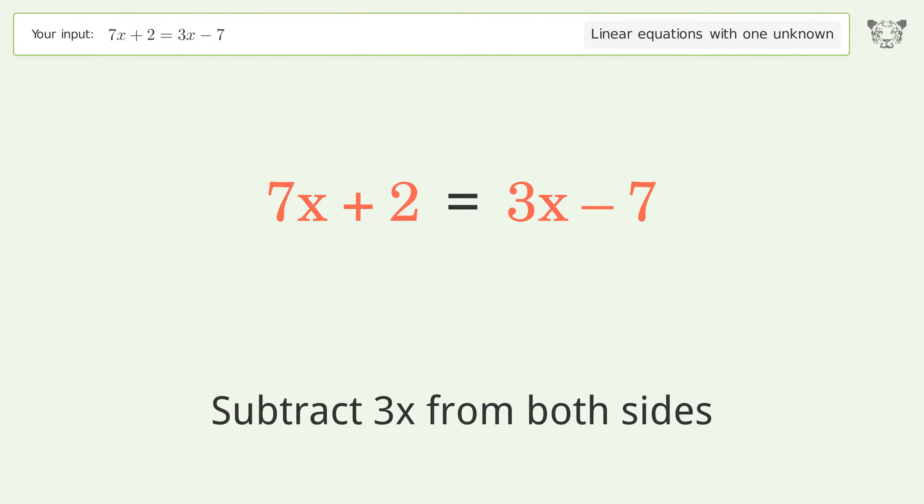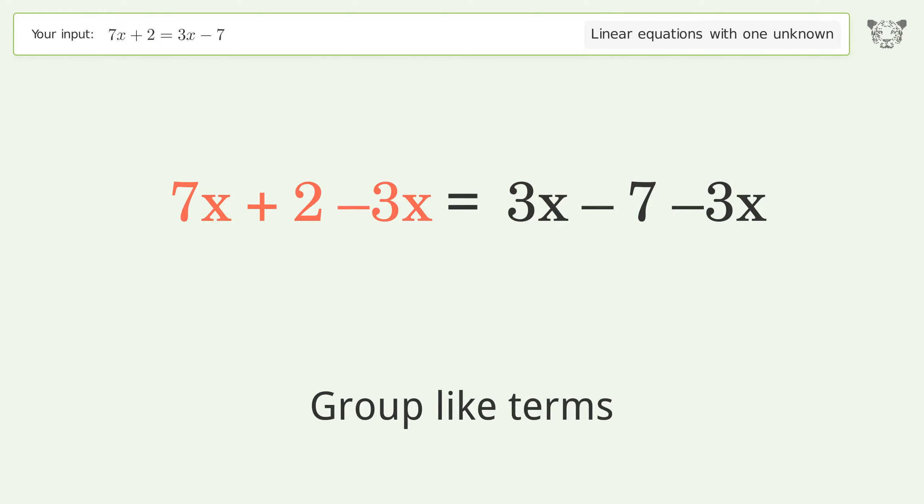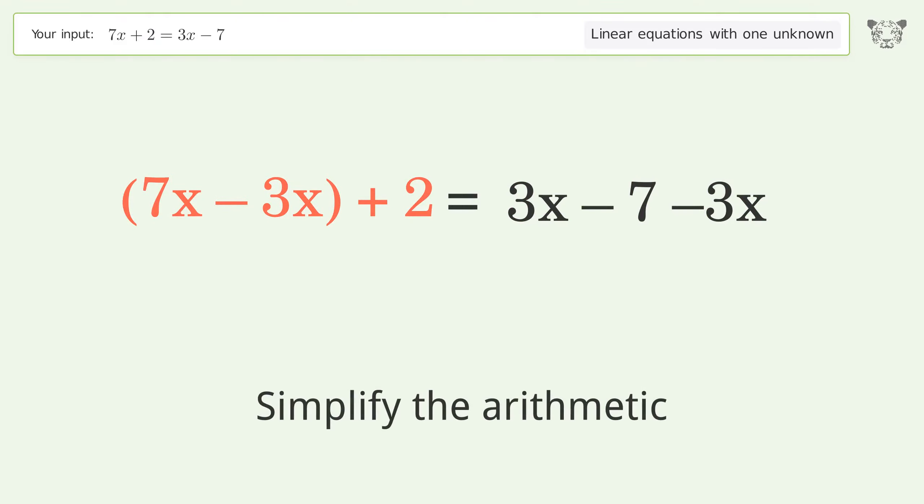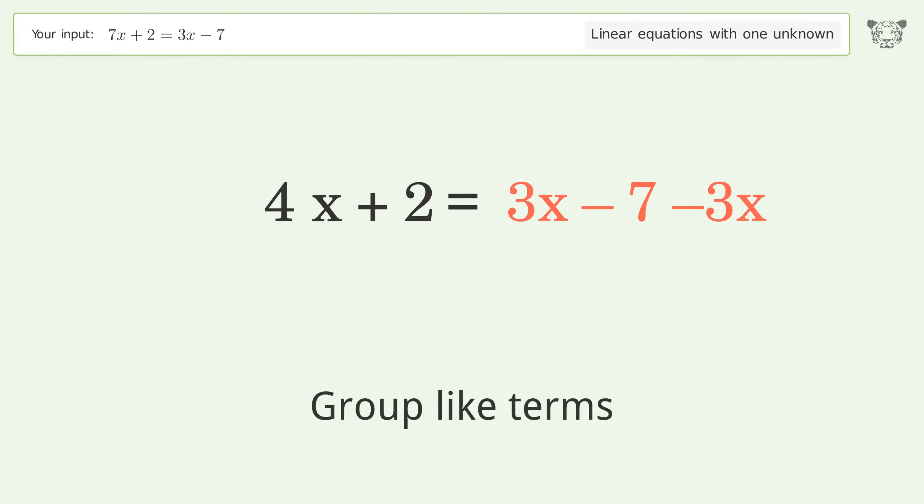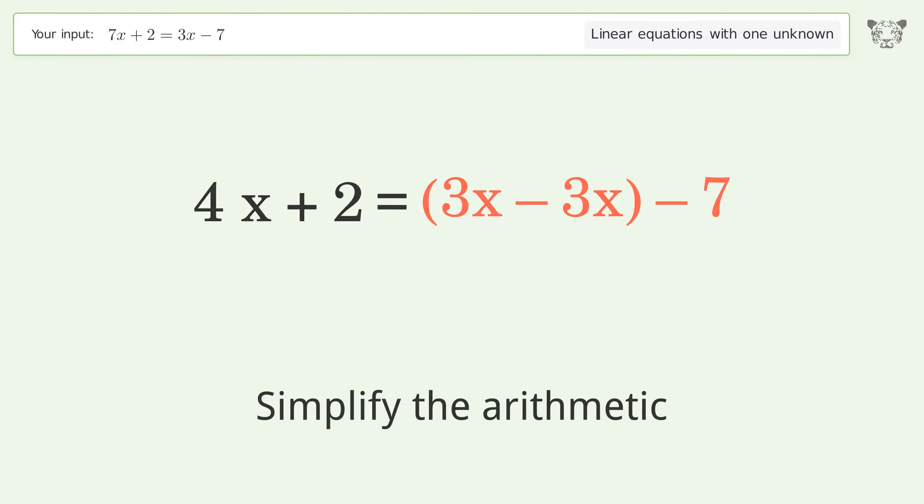Subtract 3x from both sides. Group like terms. Simplify the arithmetic. Group like terms. Simplify the arithmetic.